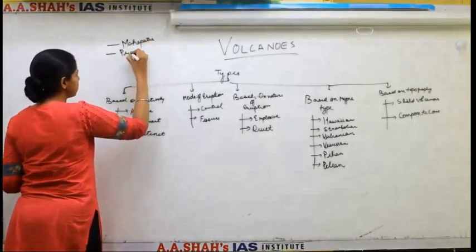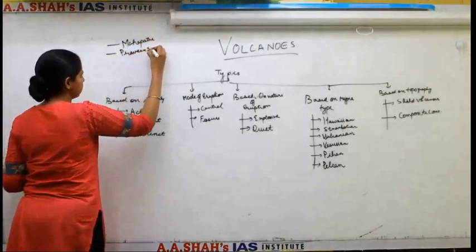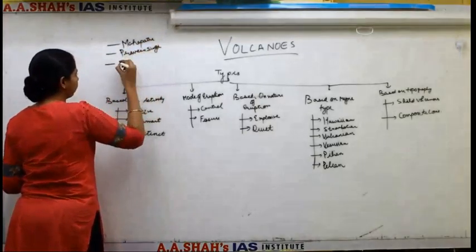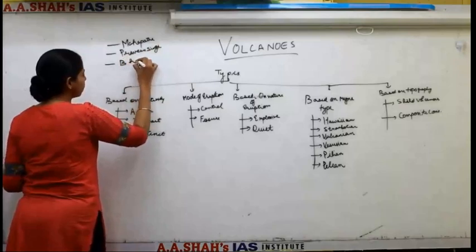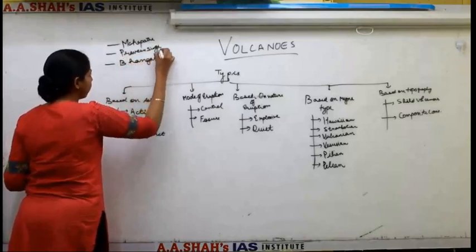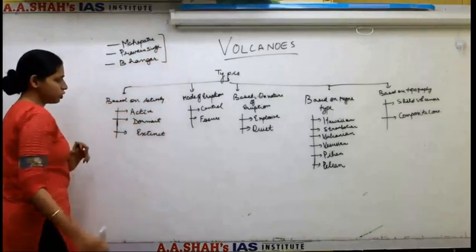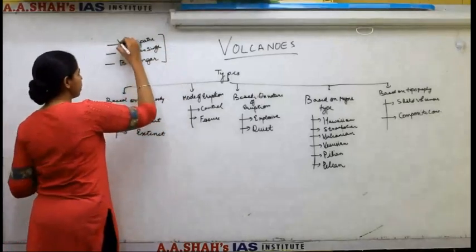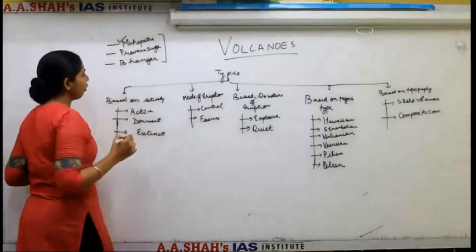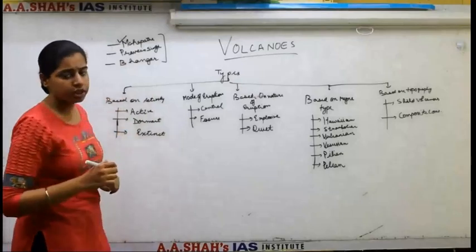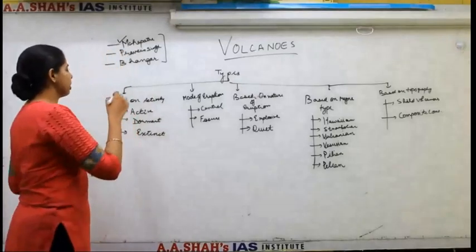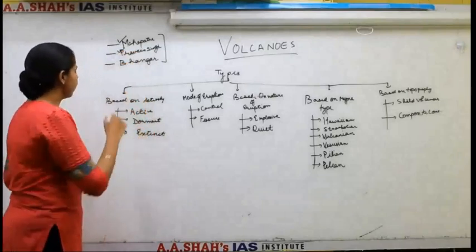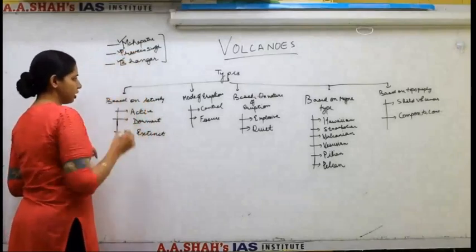Then you have Praveen Singh. These are the three books that will cover many portions of Geology, so these three basic books should be done. Mahapatra is very good for General Geology and Geomorphology. Praveen Singh covers the concepts of Engineering Geology very nicely, and Dhankar is very good for Stratigraphy.